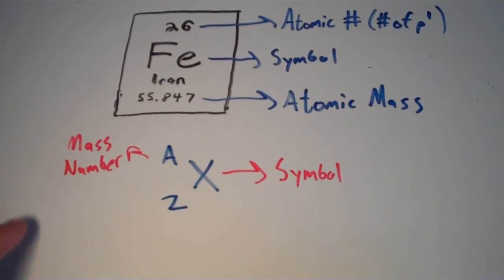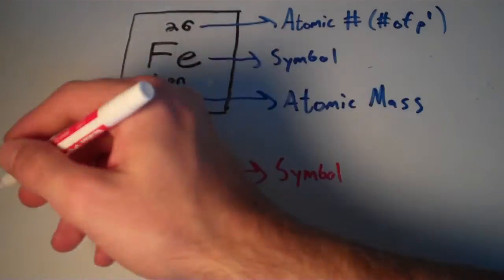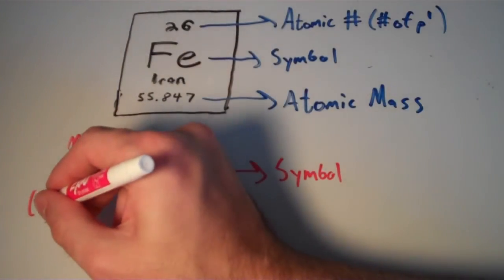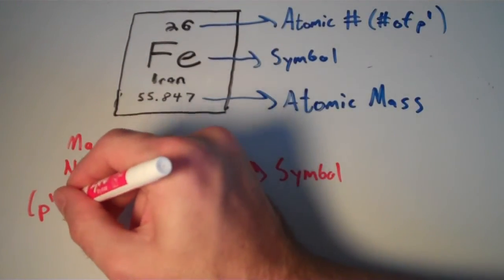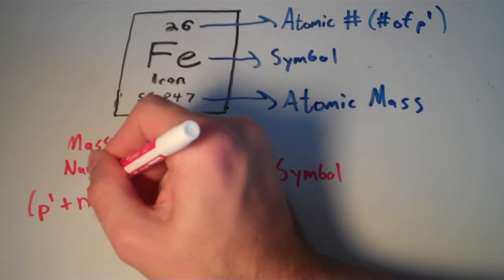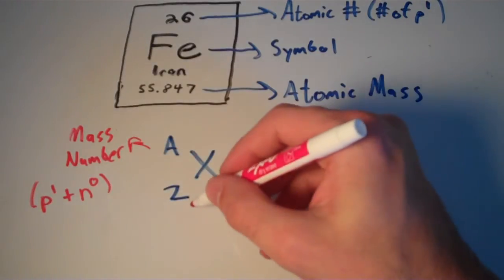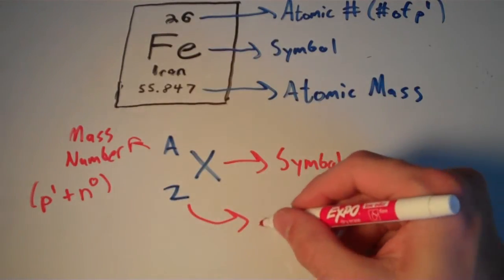The A is what we call the mass number. And be careful, because the mass number and the atomic mass are two entirely different things. They are sort of related, and we'll go into how they're related in another video. But the mass number is actually the number of protons plus the number of neutrons in the atom. So P+ plus N0. That is the mass number. And finally, our Z, that is our atomic number.